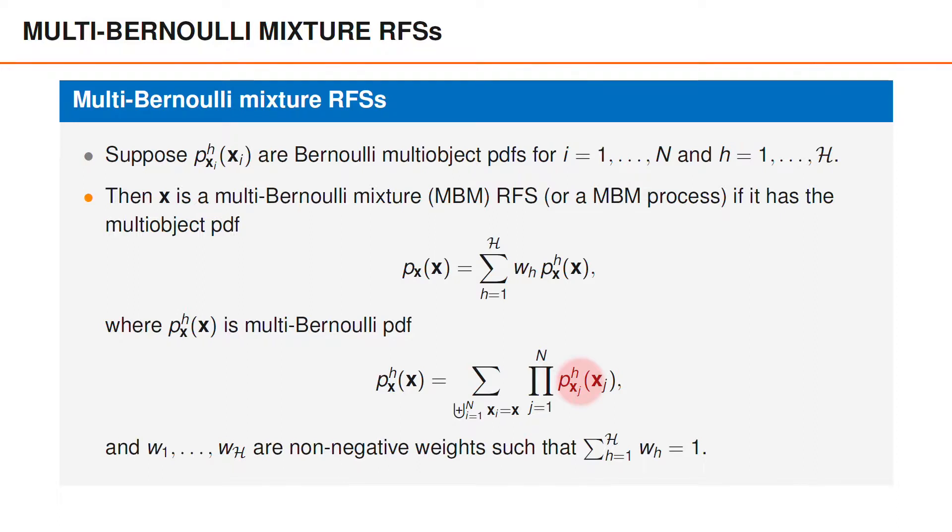Consequently, under hypothesis H, X has a multi-Bernoulli PDF, P_H(X), which can be written as a summation over all mutually disjoint sets, X_1 to X_N, whose union is X, of the product over all the corresponding Bernoulli PDFs. Note that this summation over the products is how we expressed multi-Bernoulli PDFs in the last video.